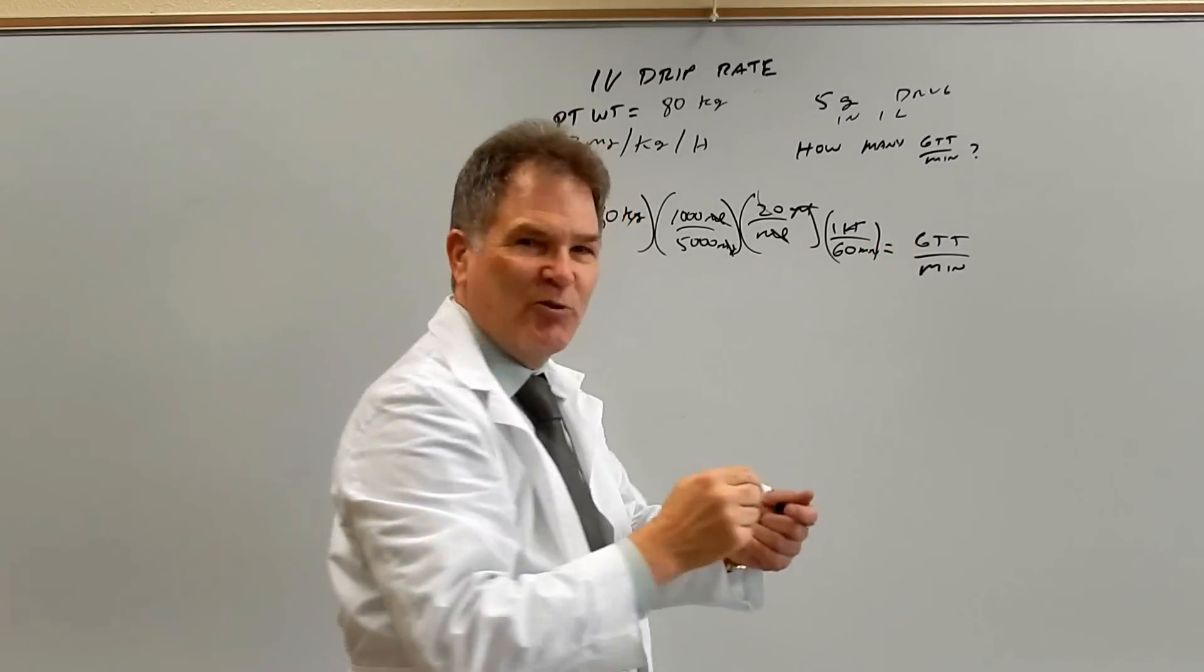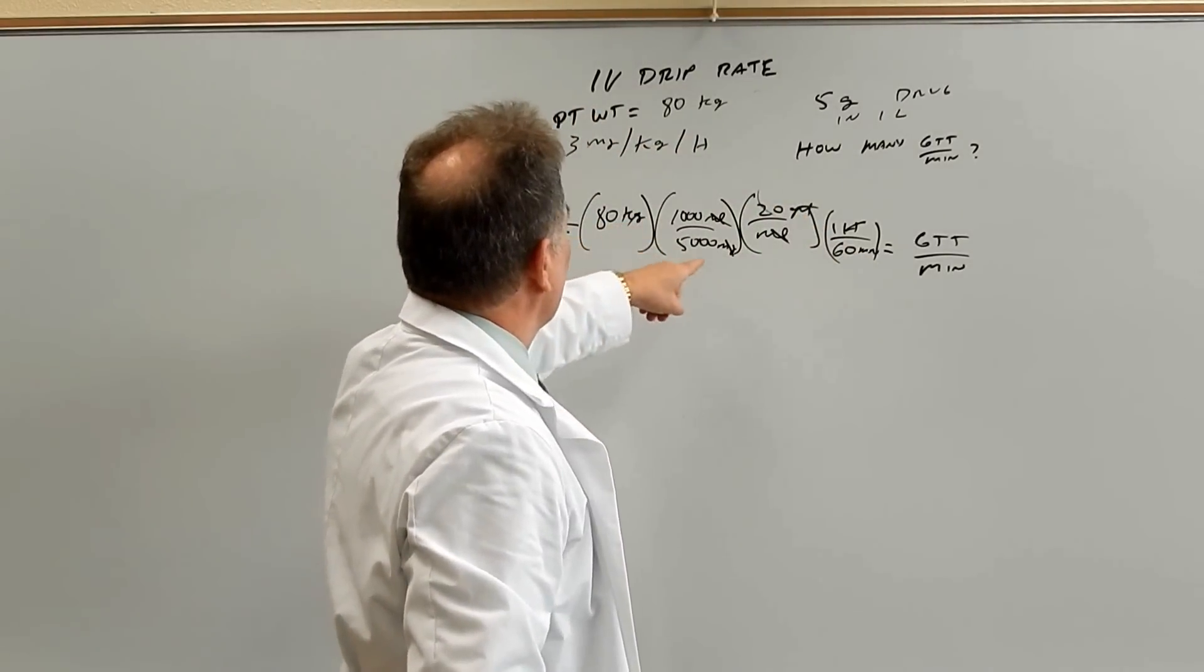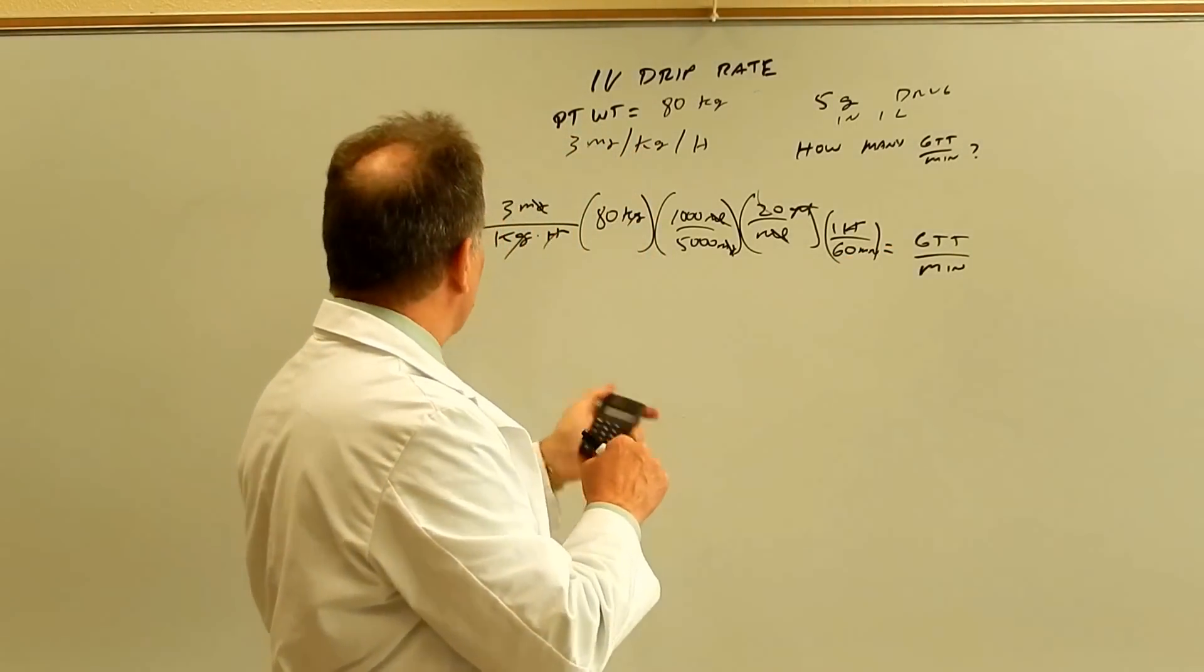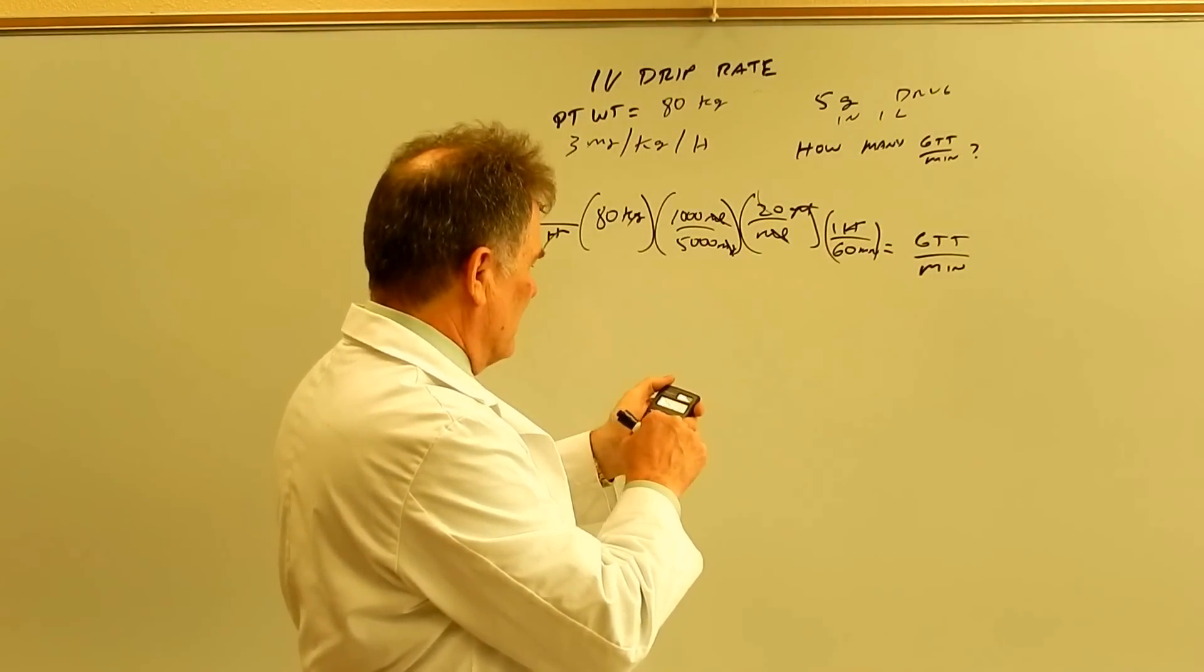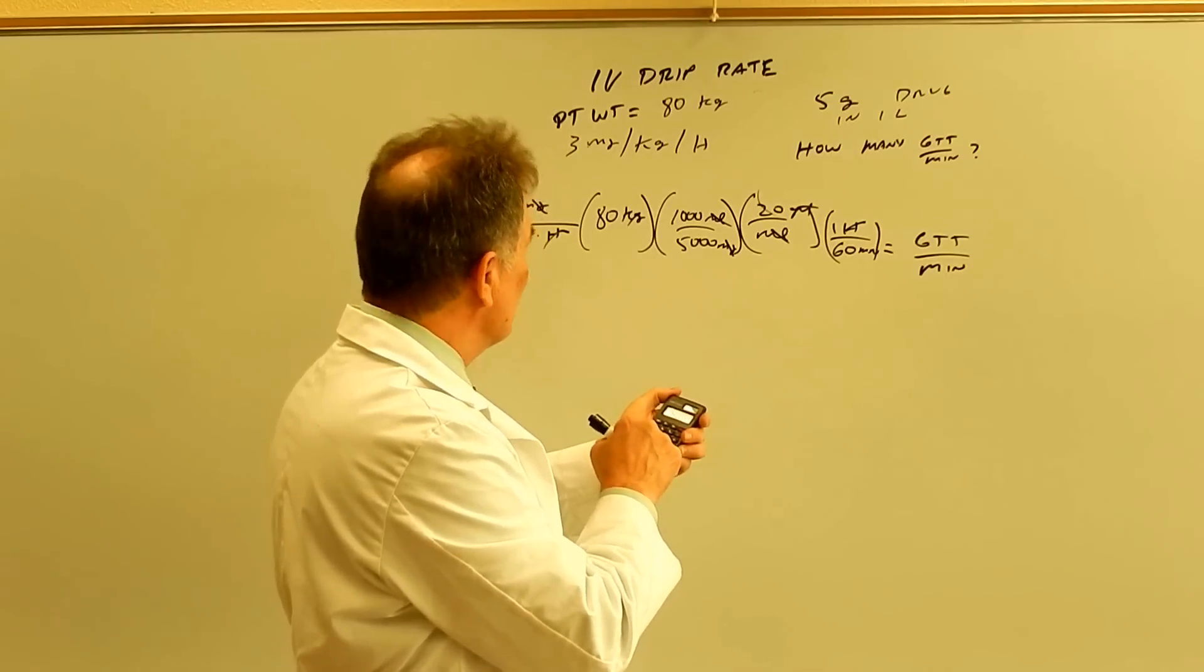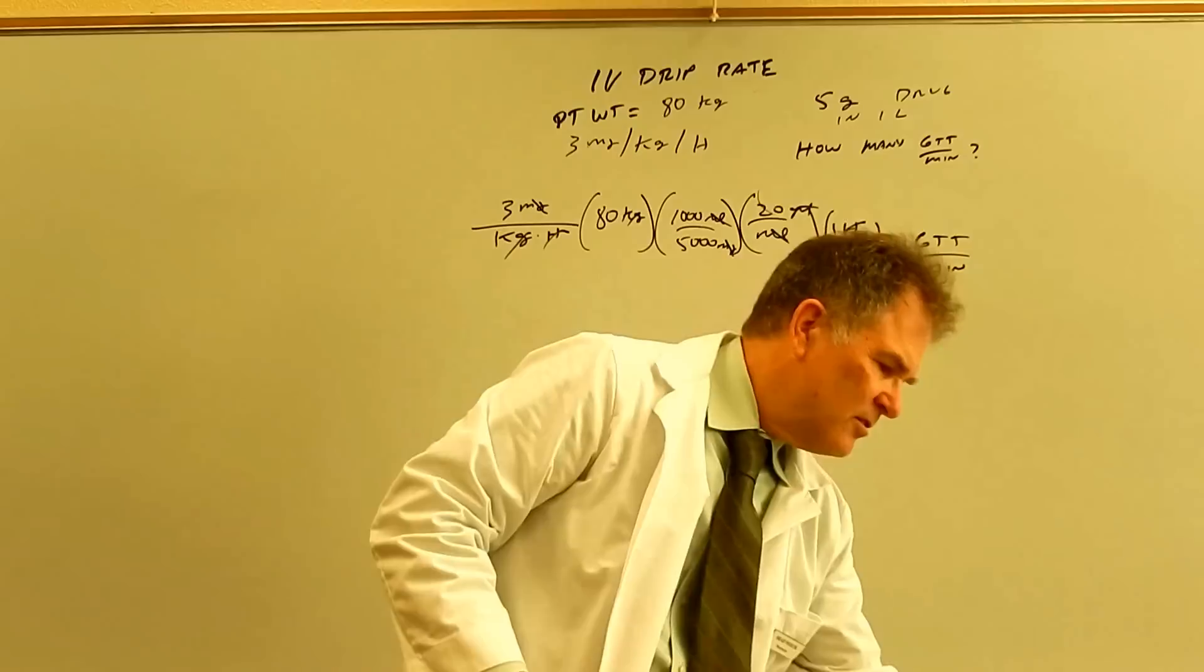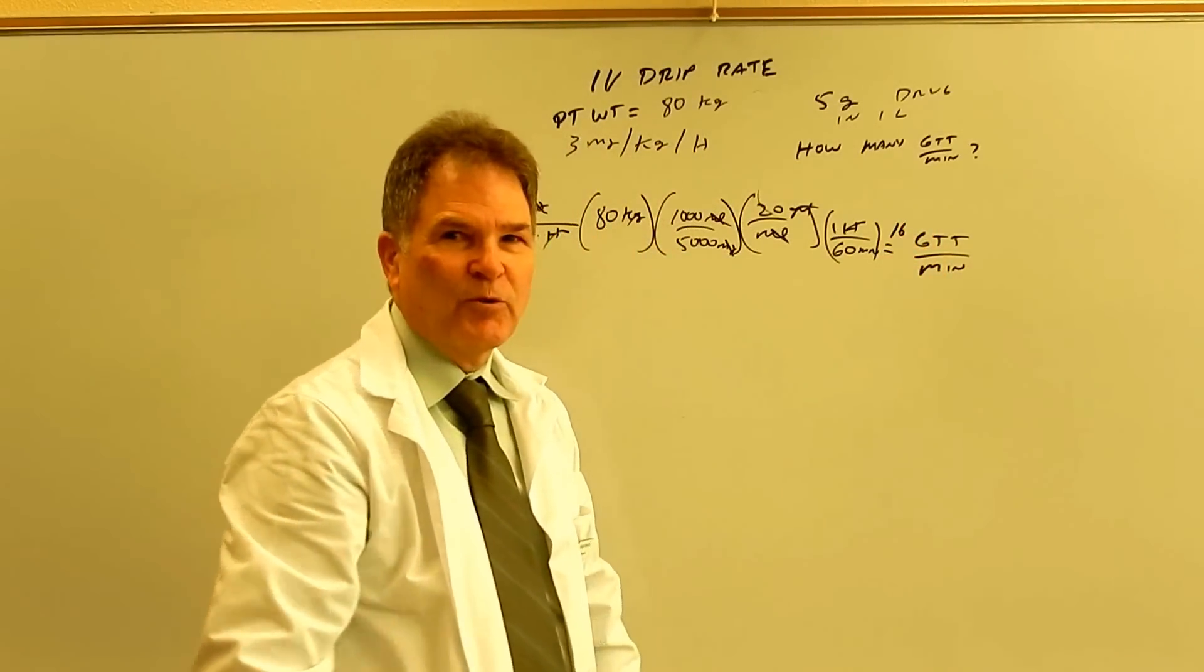So I didn't leave much room for the answer, but that's okay. So let's just double check here. We have drops per minute. And that's what we want. So now we can do the calculations. We have 3 times 80 times 1,000 divided by 5,000 times 20 divided by 60. And that gives us 16 drops per minute. And we're done.